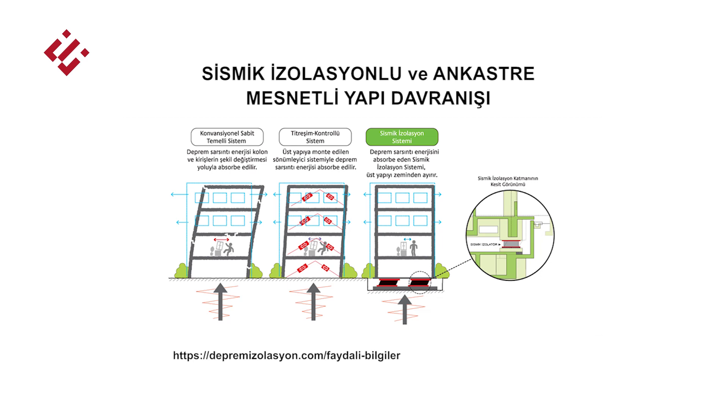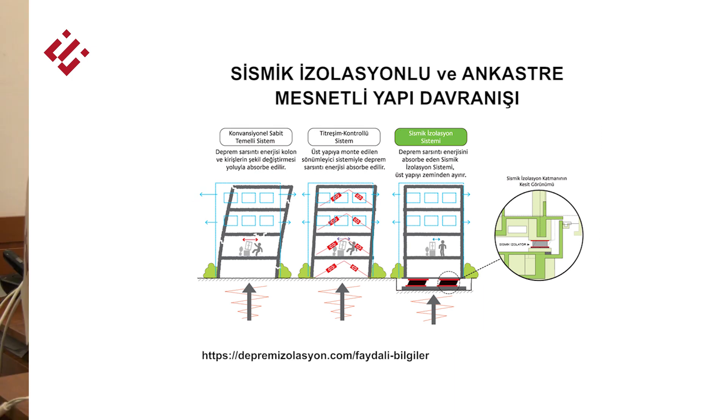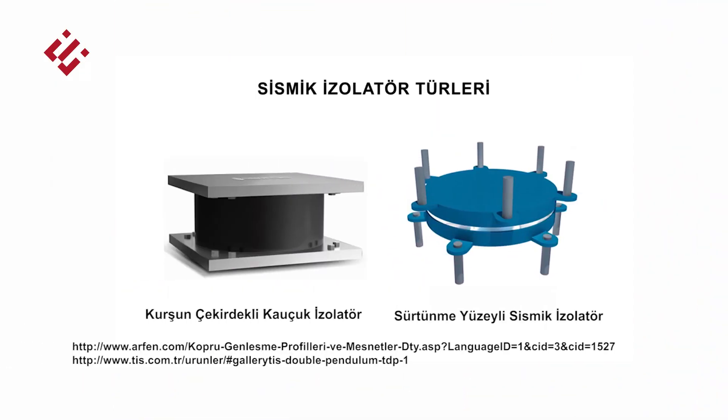Bu yöntemin temel amacı depremin neden olduğu ve hasara yol açan titreşimlerin yapılara aktarılmadan sönümlenmesidir. Bu amaçla kullanılan yapı malzemelerine sismik izolatör adı verilir. Hem dünya genelinde hem de ülkemizde yaygın olarak kullanılan iki tip sismik izoratör bulunmaktadır.